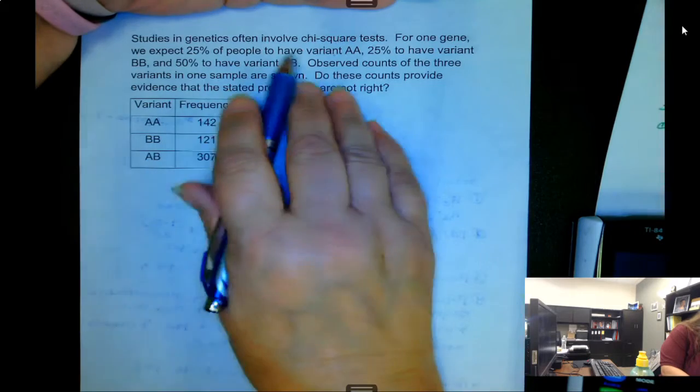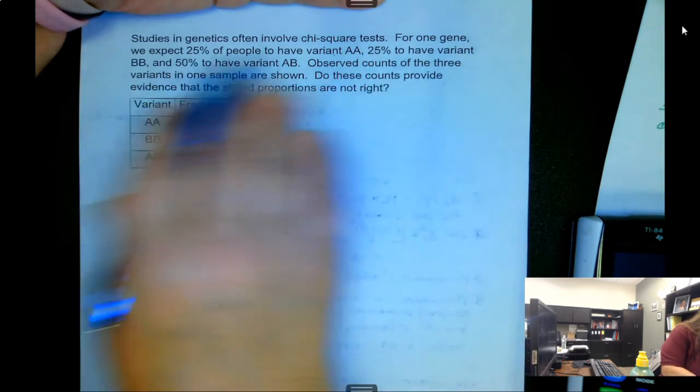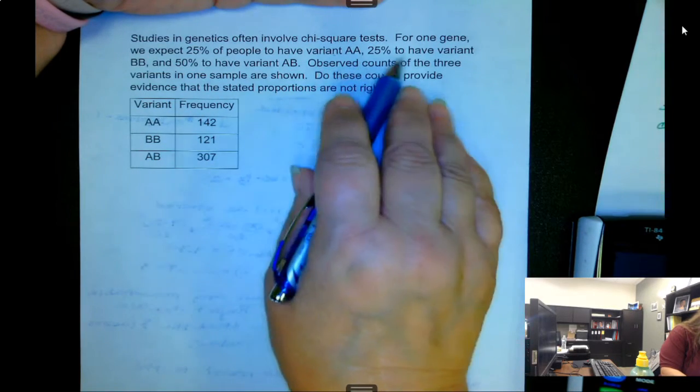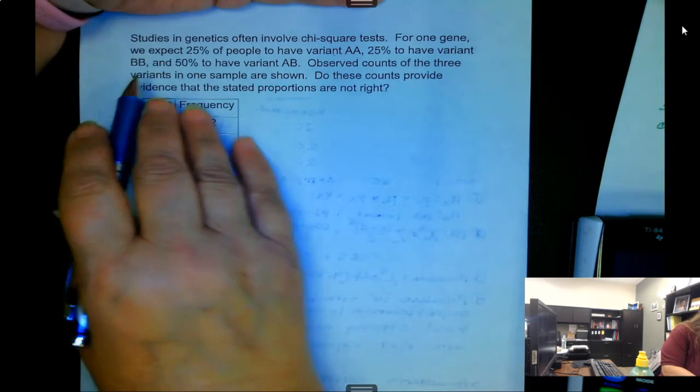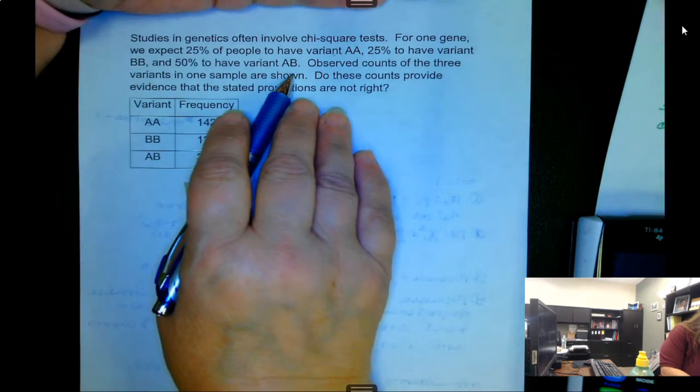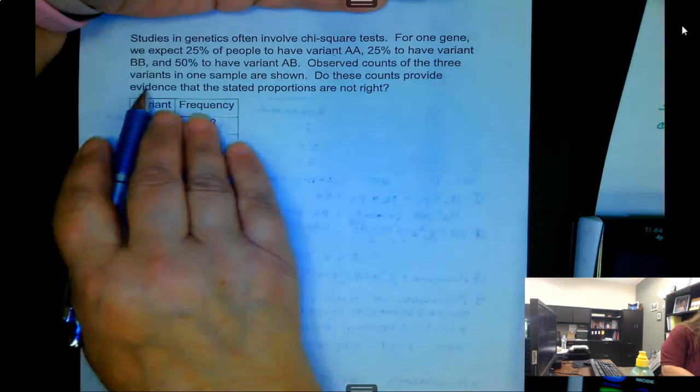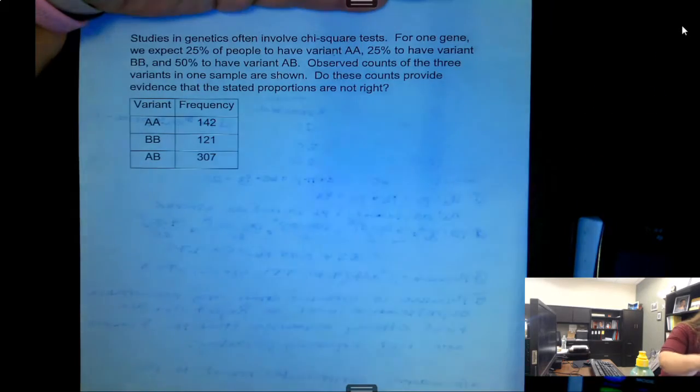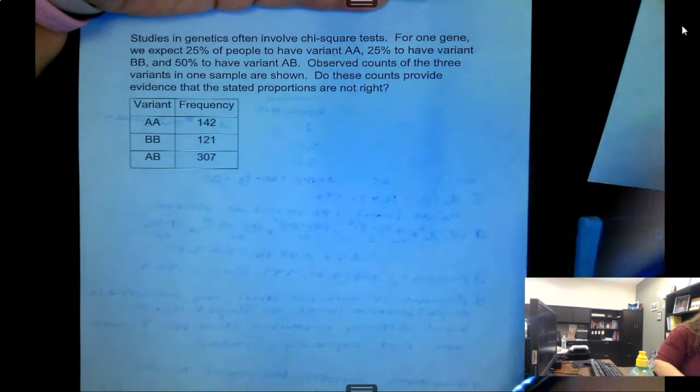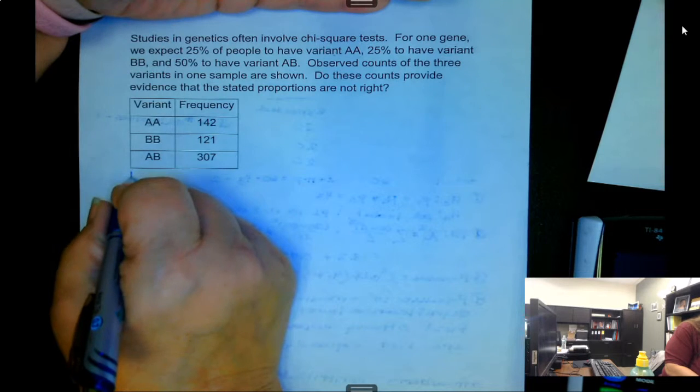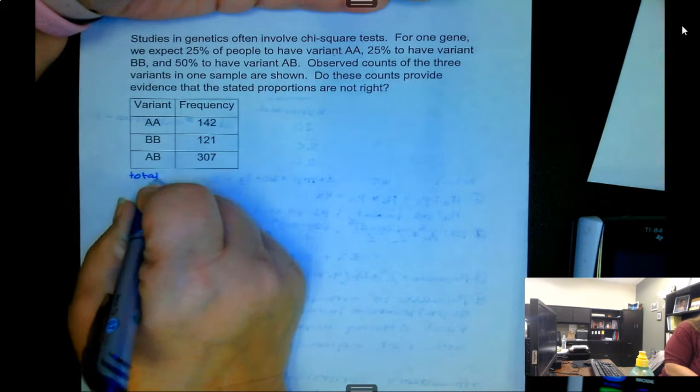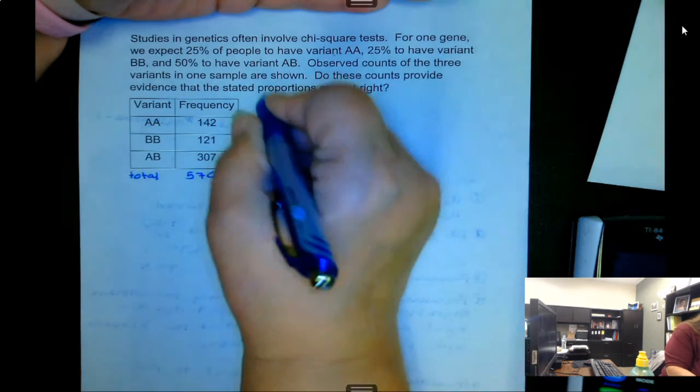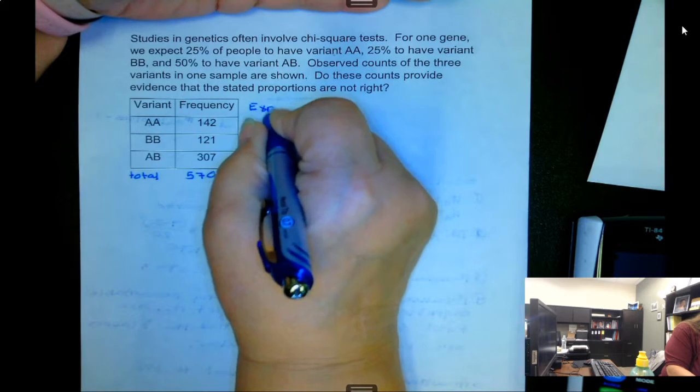So studies in genetics often involve chi-squared tests. For one gene we expect 25% of the people to have variant AA, 25% to have variant BB, and 50% to have variant AB. Observed counts of the three variants in one sample are shown. Do these counts provide evidence that the stated proportions are not right? So first thing we need to do is get our total. If we add these up we have a total of 570. We need to get the expected values.